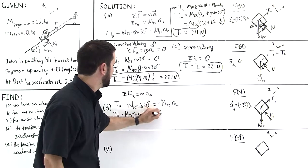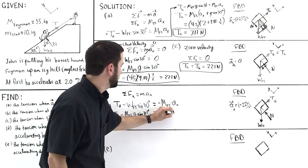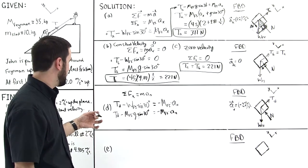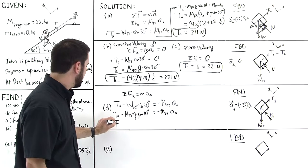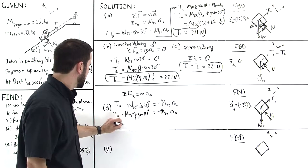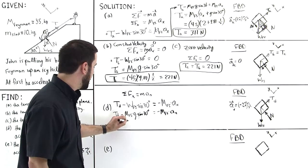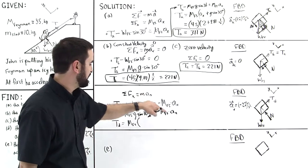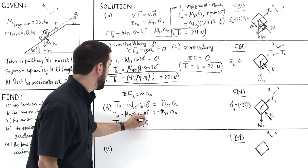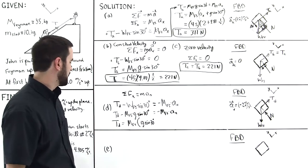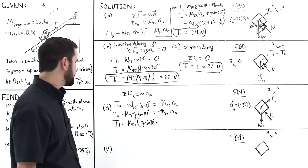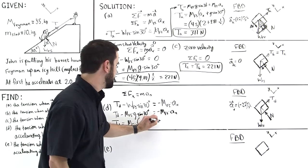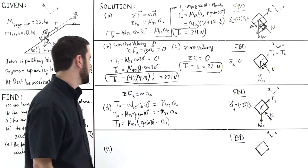Equal to negative Mfs times the acceleration in the X direction. So I'm bringing this thing over and then factoring out Mfs so that the tension that John is exerting in Scenario D will be equal to factoring out Mfs. So we have G times the sine of 30 degrees minus, because this term got added to this negative term, and then we factored out that Mfs, so minus the acceleration in the X direction like so.